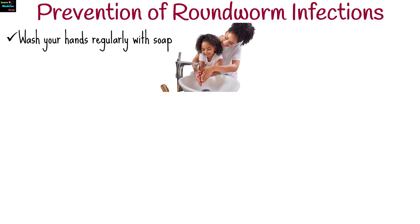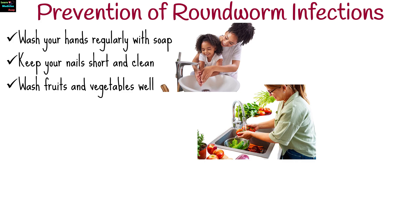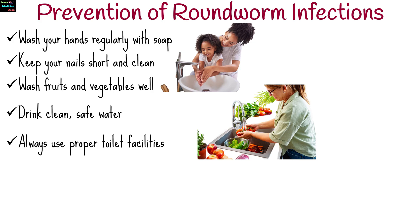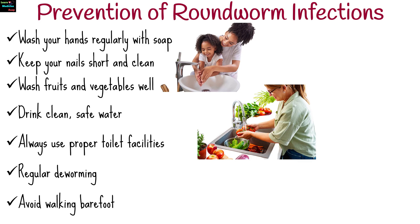Now let's talk prevention, because avoiding infection is always better than treating one. Key prevention tips include: wash your hands regularly with soap, especially after using the toilet and before eating; keep your nails short and clean; wash fruits and vegetables well and cook food properly; drink clean, safe water — boiled or filtered if necessary; always use proper toilet facilities and avoid open defecation; regular deworming, especially for children in high-risk areas; and avoid walking barefoot in areas where soil might be contaminated.